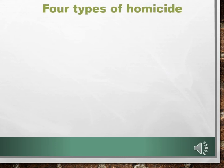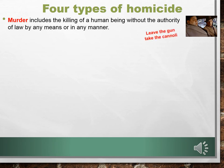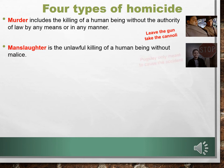Let's look at our four types of homicide to see how society decides what is and what is not a criminal killing. Murder includes the killing of a human being without the authority of law by any means or in any manner — it is the ultimate mala in se offense. For example, when Lampone kills Gatto because he's told to do so by the mob family, after which Clemenza says, 'Leave the gun, take the cannoli,' Lampone is guilty of murder. Manslaughter is the unlawful killing of a human being without malice. For example, Pugsley loves to play tricks — like removing a stop sign from an intersection to cause an accident. Pugsley only meant to cause the accident, but if somebody dies, he'll probably be charged with manslaughter.